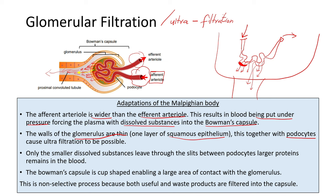Together with podocytes, this makes ultrafiltration possible. Podocytes are cells that are around the glomerulus. The podocytes are also thin, as are the walls of the glomerulus, making it easy for the smaller dissolved waste products to leave the blood and move out into the Bowman's capsule. Eventually they will go to the proximal convoluted tubule and be made into urine at some point.